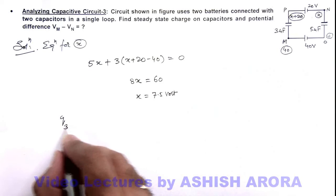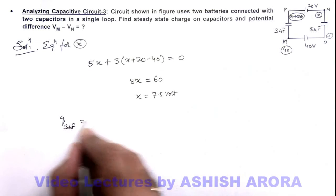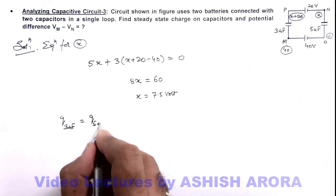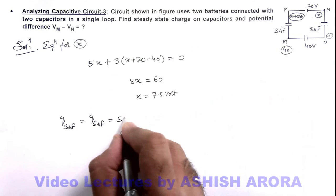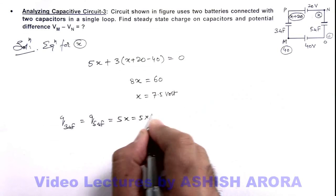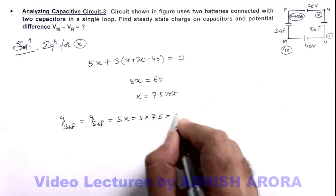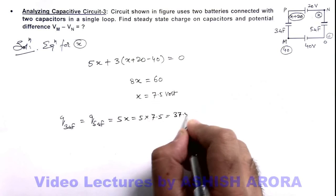So here we can write charge on 3 microfarad is equal to charge on 5 microfarad, which is equal to 5x. This is 5 multiplied by 7.5, that is 37.5 microcoulomb.